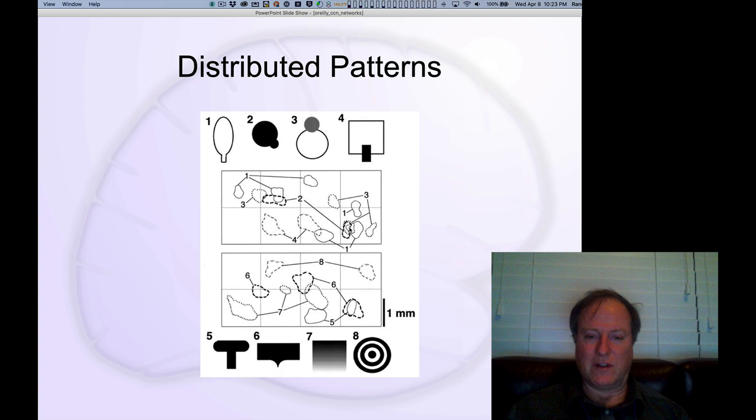Over here you have neurons that were responding to one, two, and three. If you were to show a lot more shapes, you would get a much broader sense of the overall distributed encoding of information across all these different areas. Inevitably, this is what you see when you look at patterns of neural firing.